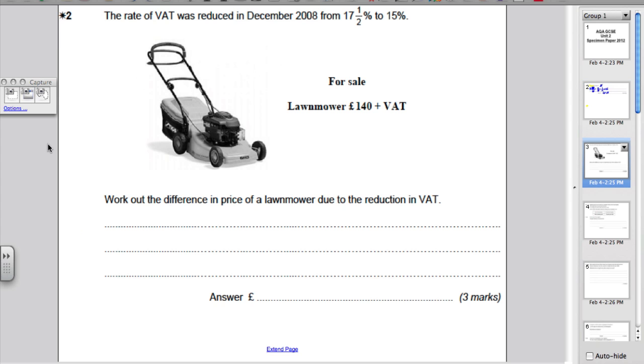Question two. Let's read this very carefully. There are different ways of doing this. The rate of VAT, that's value-added tax, was reduced in December 2008 from 17.5% to 15%. Now, here is a lawnmower and it's for sale. The lawnmower is £140 plus VAT. That means after the £140, you have to add on whatever the VAT rate is.